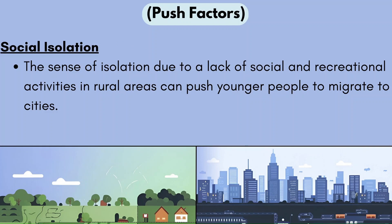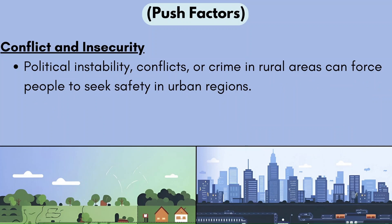Another push factor is social isolation. The sense of isolation due to the lack of social and recreational activities in rural areas can push younger people to migrate to cities — the younger generation isn't going to want to look at cows all day. Another push factor is conflict and insecurity. Political instability, conflicts or crime in rural areas can force people to seek safety in urban regions, though urban areas can also be very dangerous.